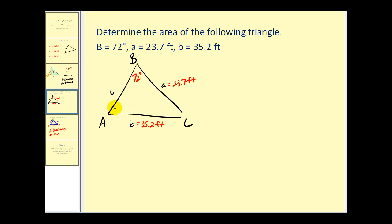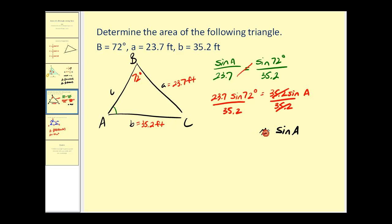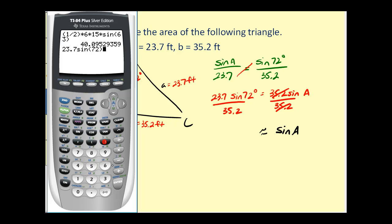So let's find the measure of angle A, and then we can indirectly find the measure of angle C, by using the law of sines. The sine of angle A divided by 23.7 must equal the sine of angle B, which is 72 degrees, divided by 35.2. Let's cross multiply, divide by 35.2, so we have the sine of angle A, which is approximately 0.6403.